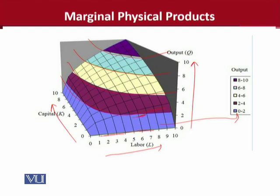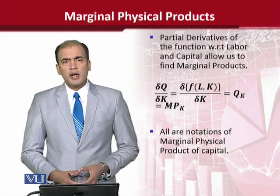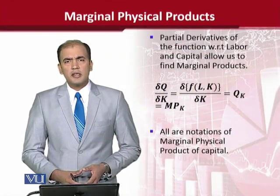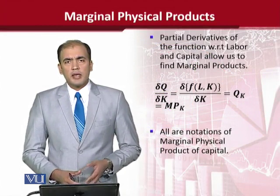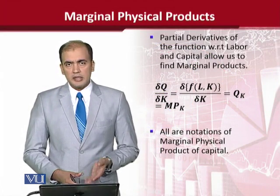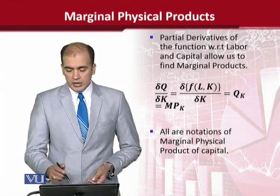The maximum level of output is represented by the color shown. This is how 3D diagrams are made when it comes to the production function. But we shall now come to the marginal physical products, and for that we need to take the derivative with respect to capital as well as labor. Let us see how that can work.